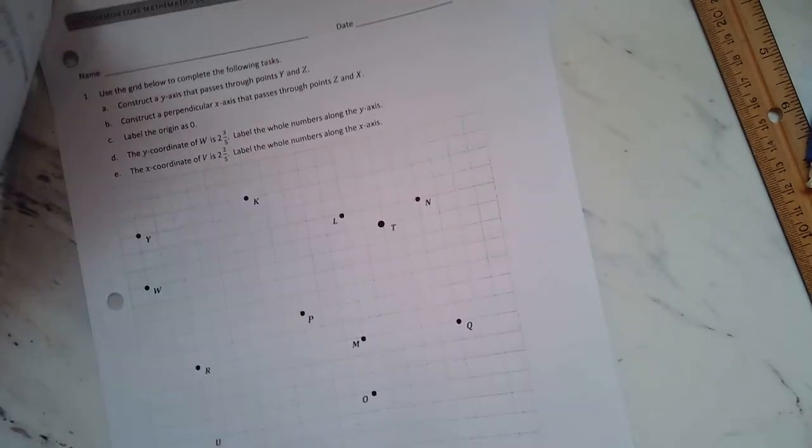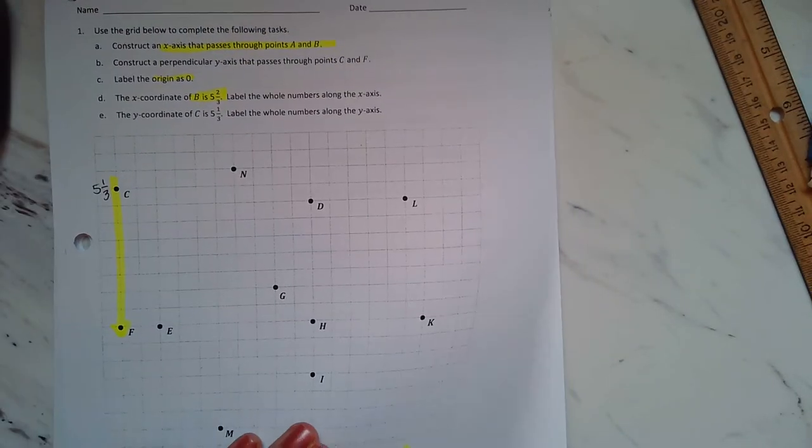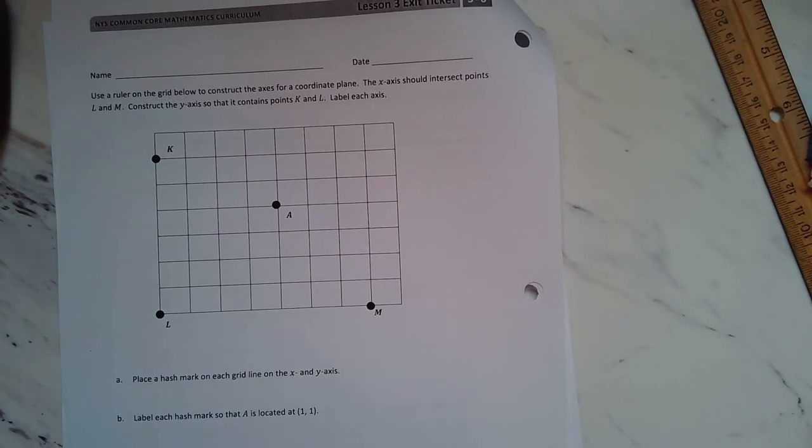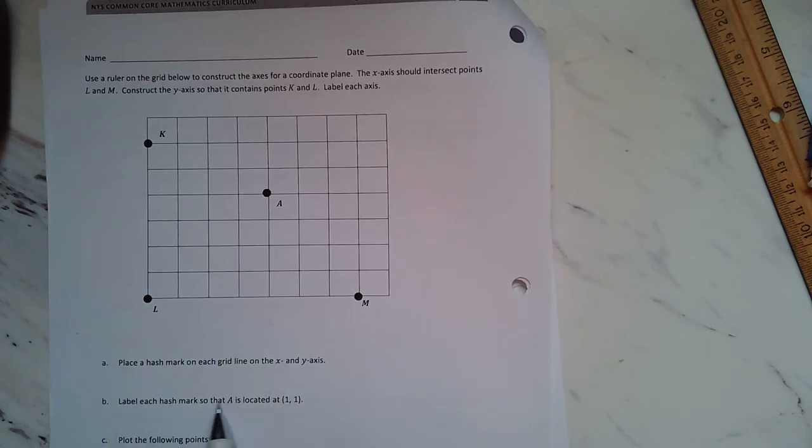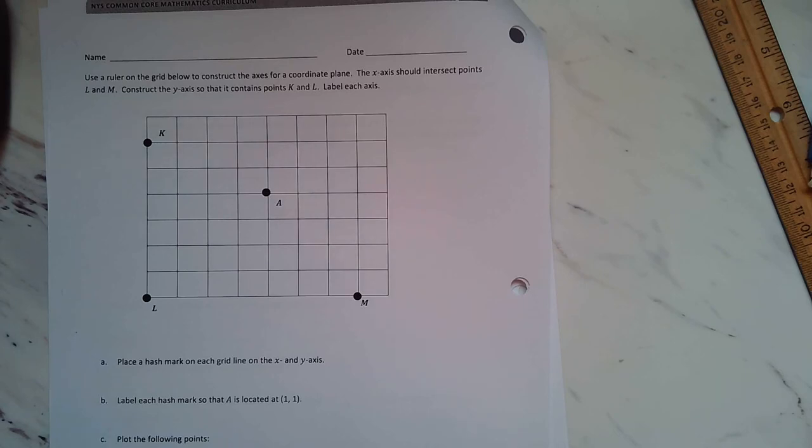All right. Then, you have your homework. And it goes exactly with what we did in concept development. For your exit ticket, you're going to follow the directions, place hash marks, label, and plot those points. All right. Good luck.